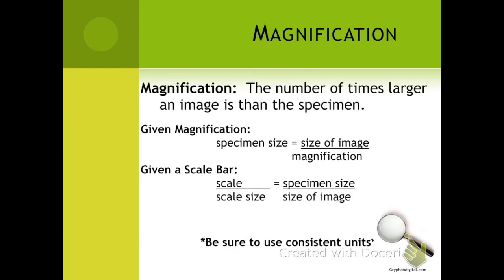If you are given information about magnification, we have two equations that you're going to be using to calculate either the magnification of the image or the actual size of the specimen. The first is to calculate specimen size when you're given the size of the image and you're given magnification. You may have to reorganize this equation if you're solving for magnification or whatever else.